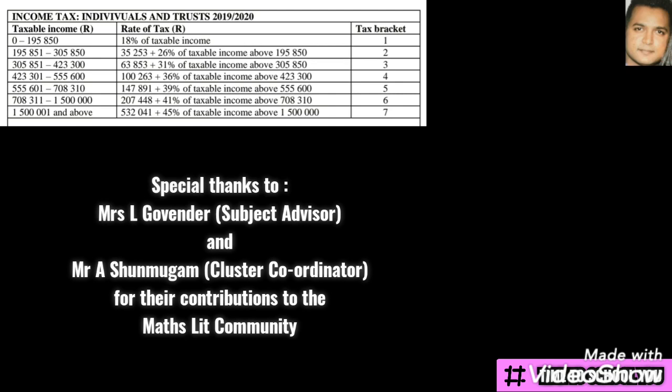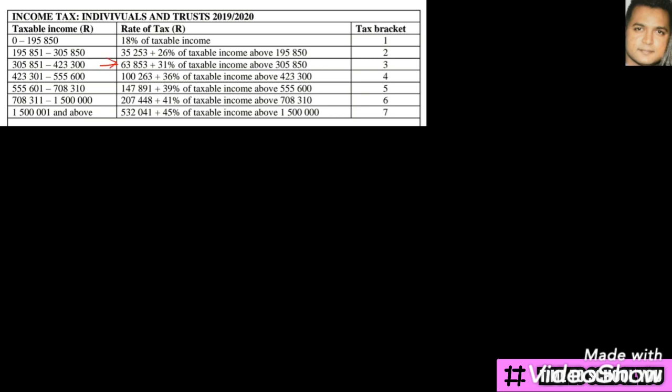We want to learn the steps on how to arrive at this particular amount, which is 63,853. The exam question asks you to show how we arrived at that. Basically, the steps are very simple. All we need to know is that the amount we're speaking about, 63,853, is in tax bracket three.